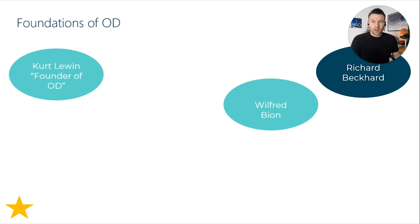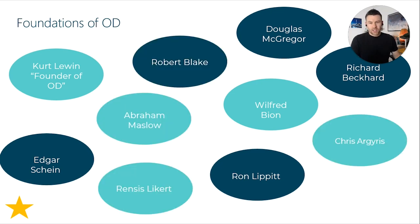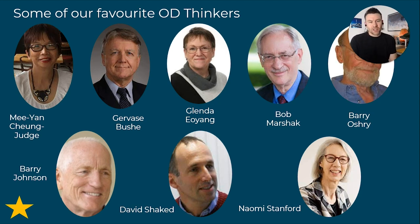Some of the foundational thinkers: Kurt Lewin, the founder of OD; Wilfred Bion, who did fascinating work on group dynamics; Edgar Schein, who did great work on organisation culture and consulting; Douglas McGregor, who looked at power in organisations; Abraham Maslow; and Chris Argyris, known for double loop learning. More modern thinkers include Mian Chung-Judge, who recently passed away; Bob Marshak on contracting; Gervais Bush on interpersonal mush; and Naomi Stanford, a prolific author on organisation design who also has a really good blog.